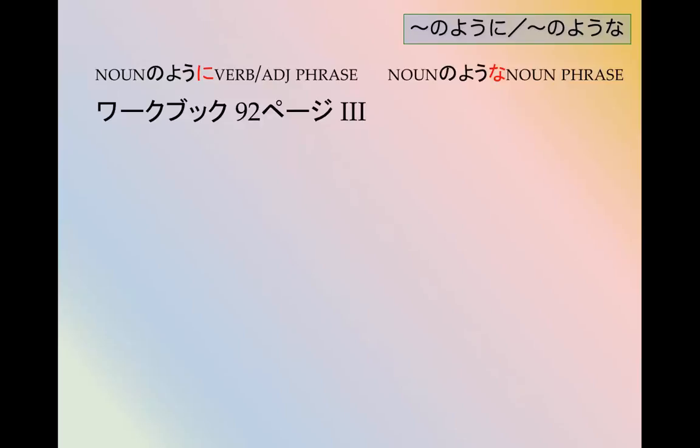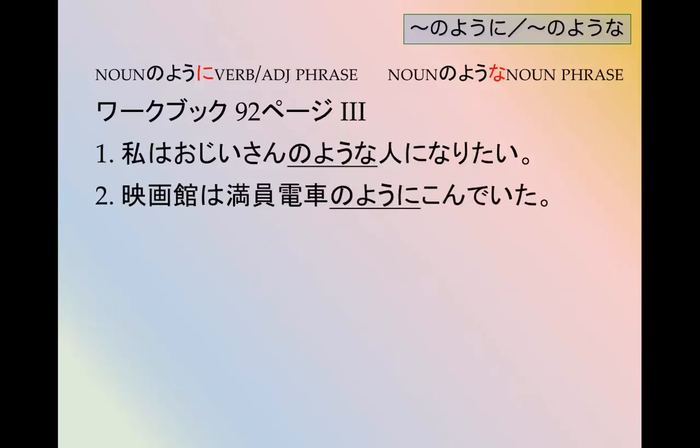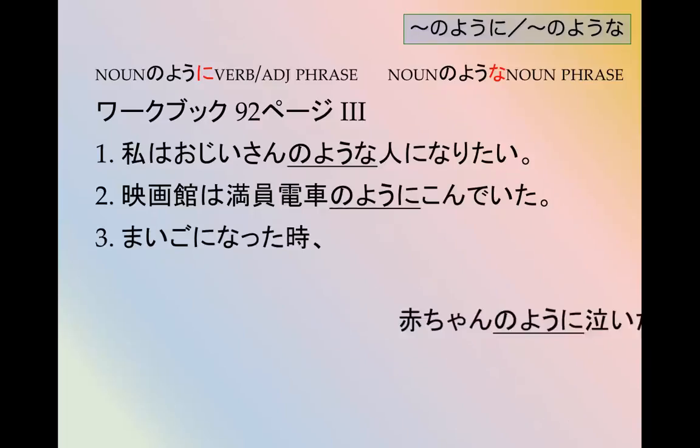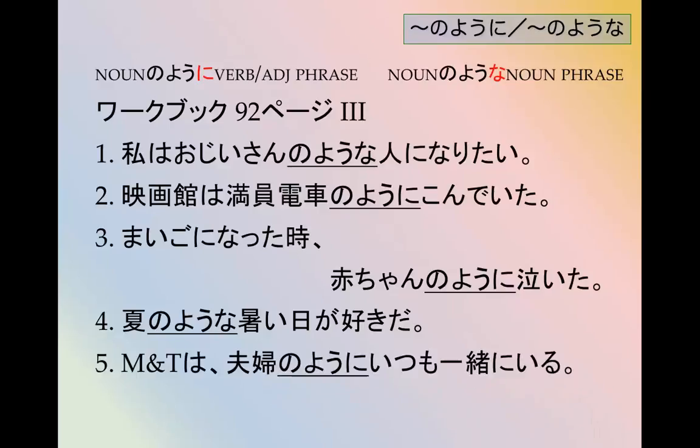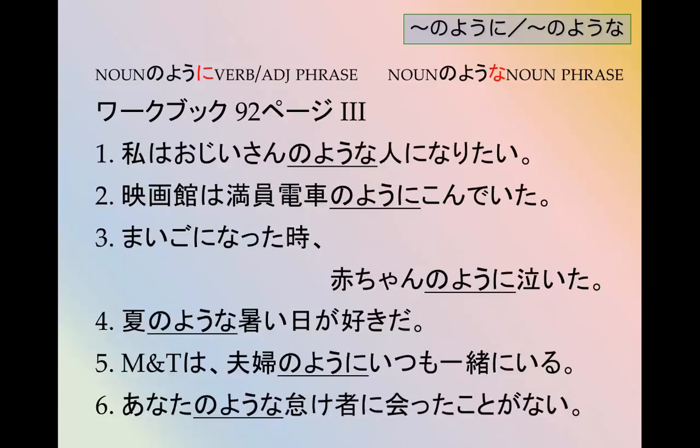Let's look at part 3 on your workbook. わたしはおじいさんのような人になりたい. 映画館は満員電車のように混んでいました. 迷子になった時赤ちゃんのように泣きました. 夏のような暑い日が好きです. メイリーさんとたけしさんは, 夫婦のようにいつも一緒にいる. あなたのような怠け者に遭ったことがありません.